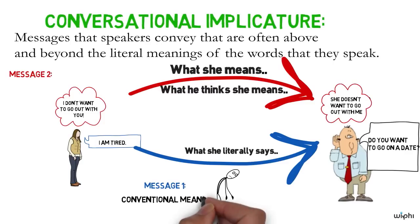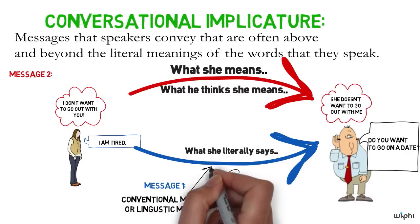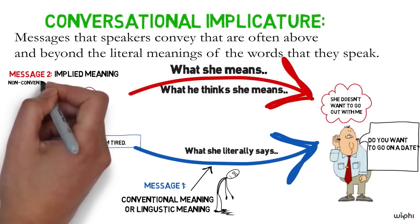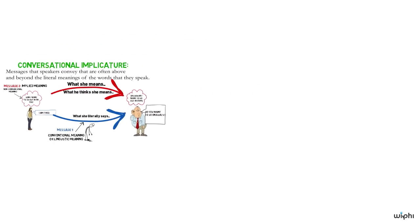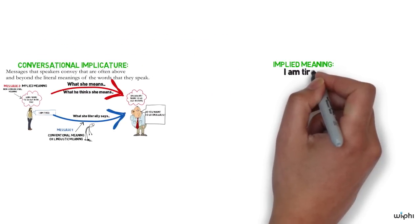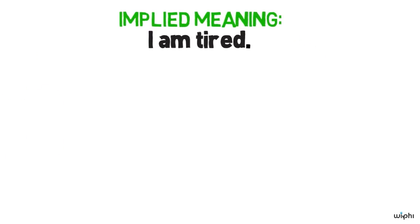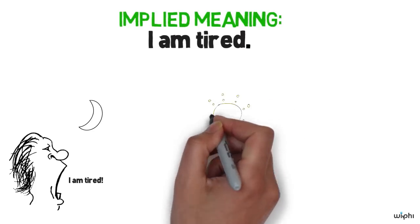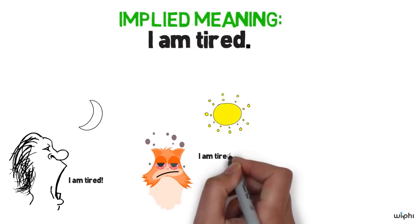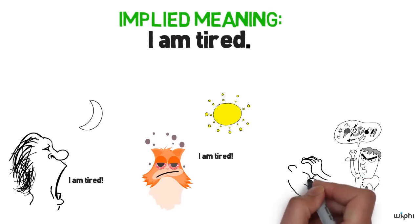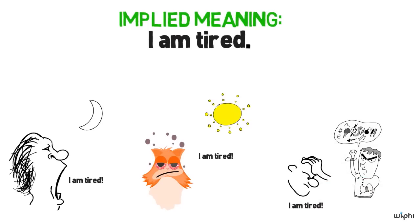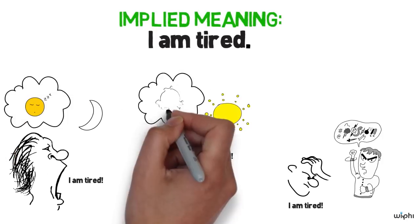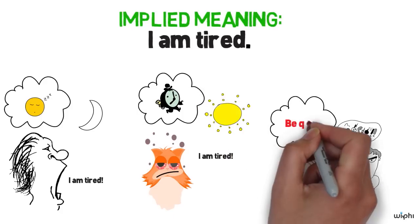The first of these meanings is what we call conventional meaning, or linguistic meaning — it's attached directly to the meanings of the words in question. The second meaning, the implied meaning, is non-conventional. It isn't attached to the meanings of the words I am tired. In another context, I'm tired won't count as turning down a date. I could say it late at night to imply I'm ready for bed, or first thing in the morning to imply I don't want to get up, or during an argument to imply I don't want to argue anymore. The same sentence can imply many different things in many different contexts, so the implied meaning is non-conventional.